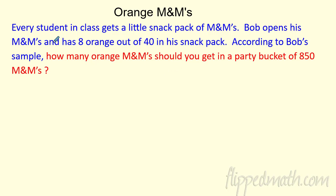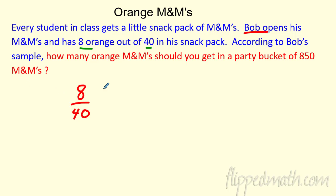So if I give every student a snack pack — Bob right here opens his up and gets eight out of 40. That's going to be important. This is kind of like an experimental probability. If we got eight out of 40, that doesn't mean everybody got eight out of 40. It just means Bob did. So this would be his snack pack — his eight orange M&Ms over the total M&Ms.